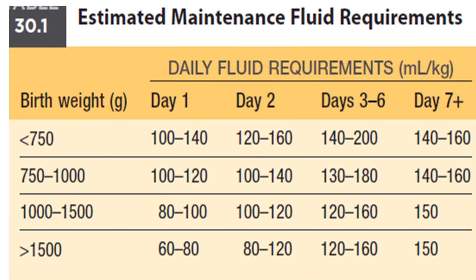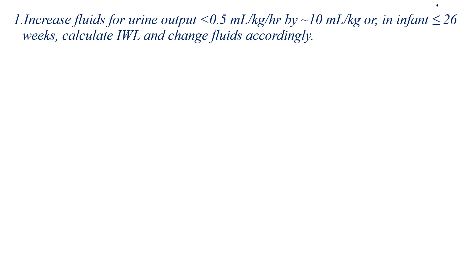This is the daily fluid requirement in ml per kg based on the age of the child and birth weight. For infants between 1–1.5 kg, start on day 1 at 80–100 ml per kg and increase by 20 ml per kg per day. For infants more than 1.5 kg, start at 60–80 ml per kg per day and increase by 20 ml per kg per day. On day 1 give only 10% dextrose; on day 2 make 1/3 or 1/4 normal saline and 3/4 D10 to add sodium. Increase fluids for urine output less than 0.5 ml per kg per hour by 10 ml per kg, or for infants less than 26 weeks calculate insensible water losses and adjust fluid accordingly.